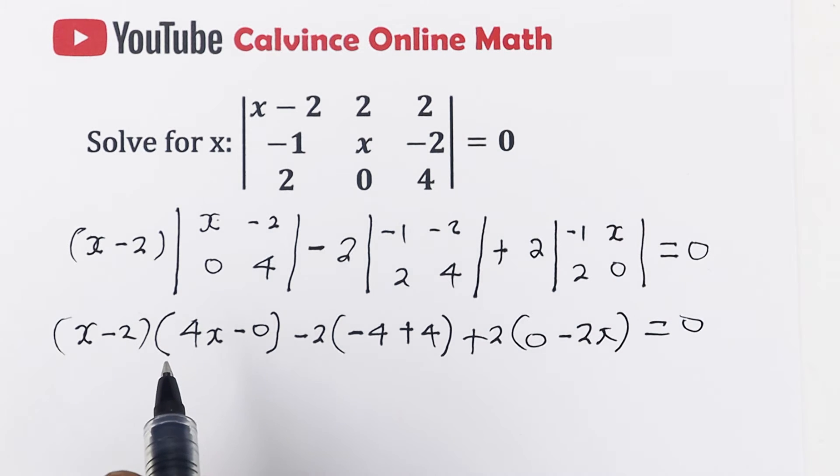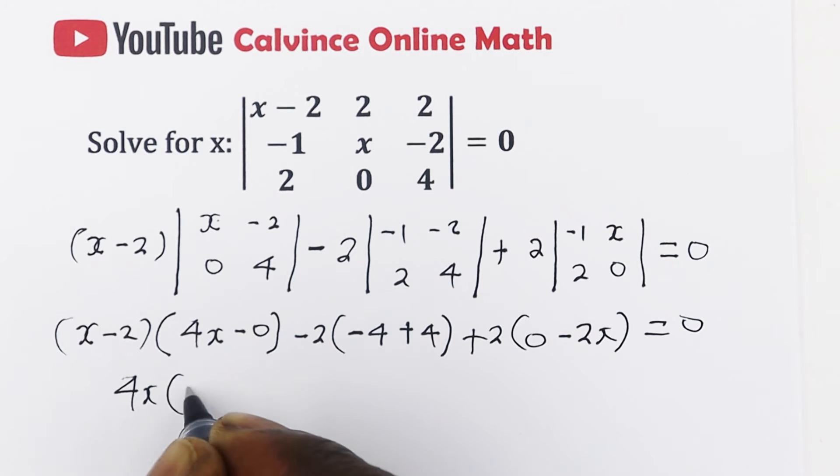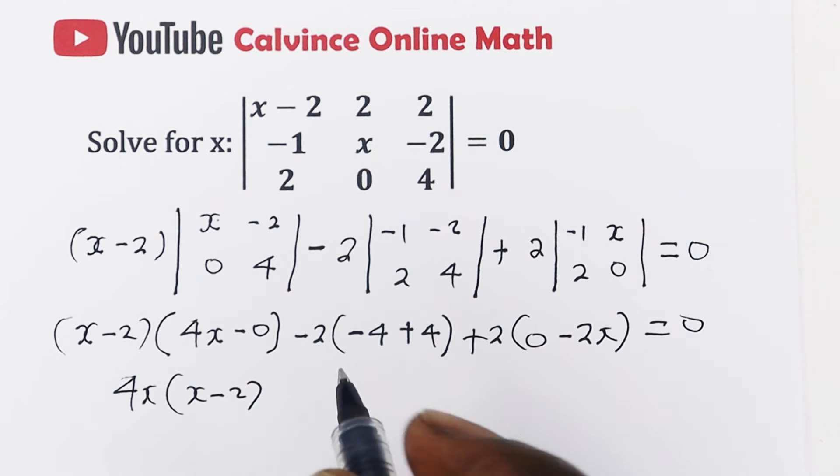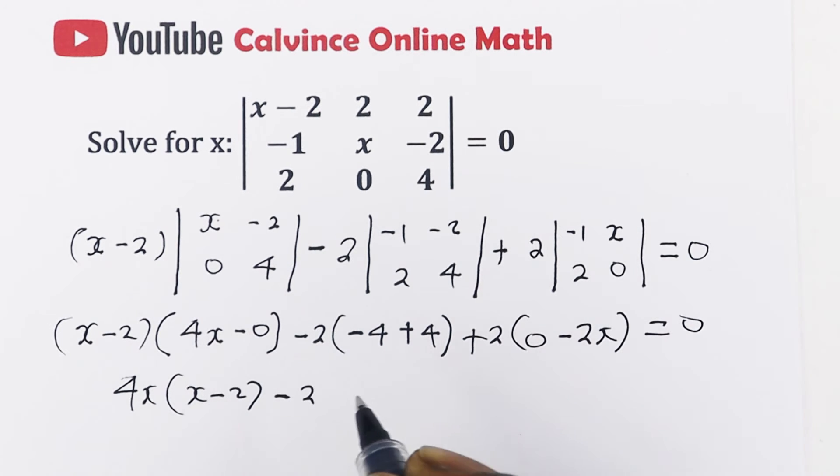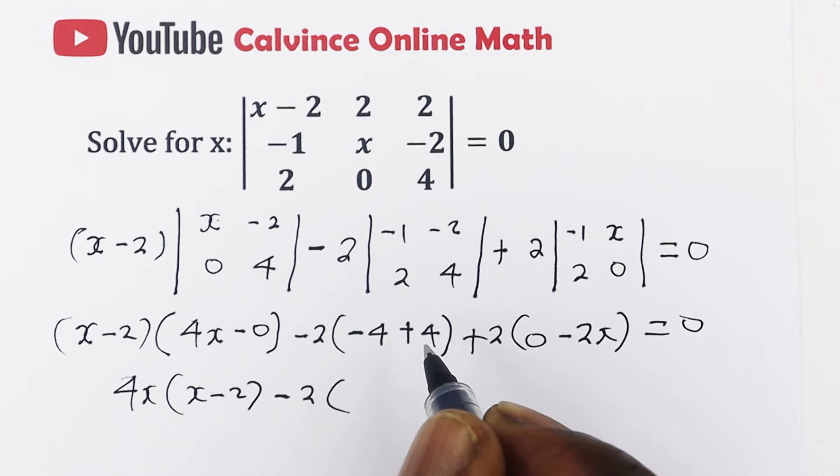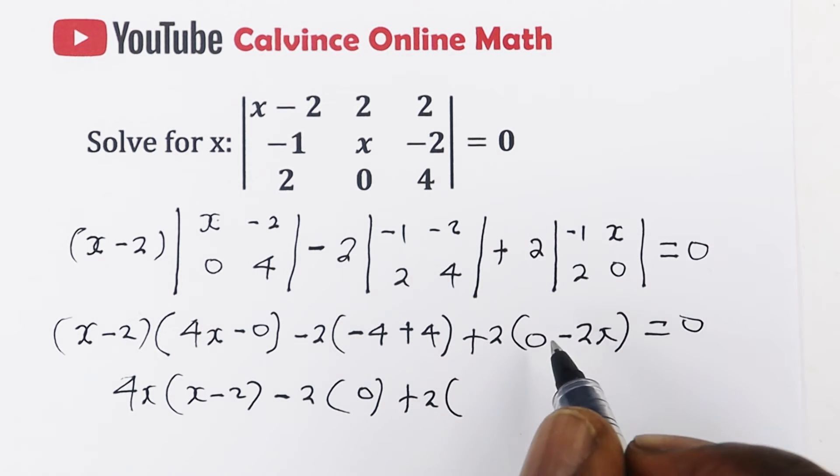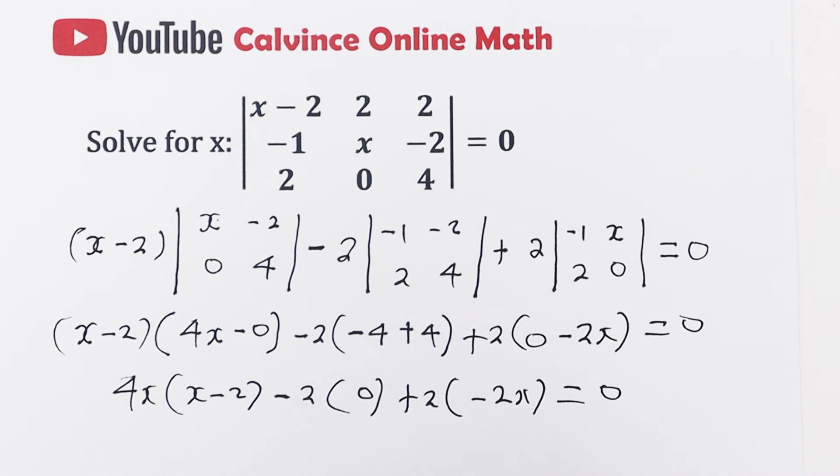So let us just simplify what we have. Here we have x minus 2 times 4x, that is 4x into x minus 2. Then we have minus 2 into minus 4 plus 4, that is 0, plus 2 into minus 2x, and that's equal to 0.